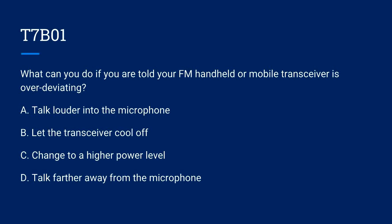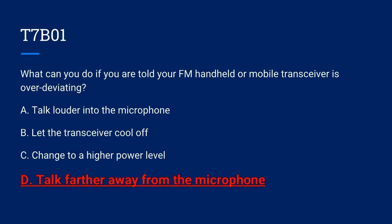T7B01. What can you do if you are told your FM handheld or mobile transceiver is over-deviating? A. Talk louder into the microphone. B. Let the transceiver cool off. C. Change to a higher power level. Or D. Talk further away from the microphone. The correct answer is D. Talk further away from the microphone.